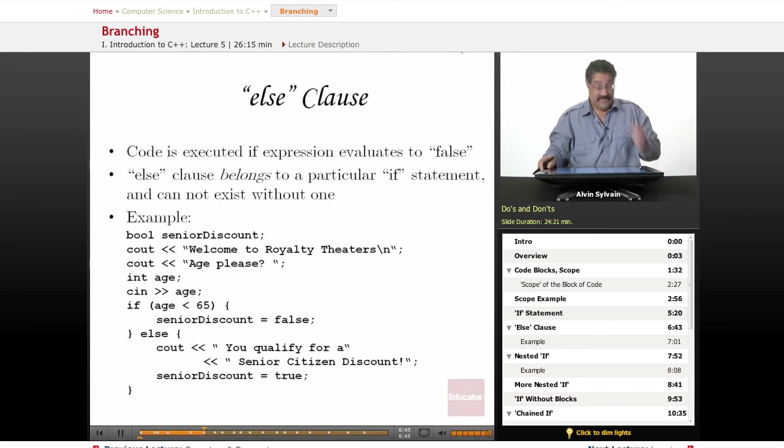Else clause. The code is executed if the if expression evaluates to false. And if you put an else onto the if, it will go into the else portion. So here we have if the age is less than 65, you don't get a senior citizen discount. But if you're 65 or older, this will evaluate to false. So you'll go down into the else clause. You qualify for a senior citizen discount. And we set the flag equal to true.